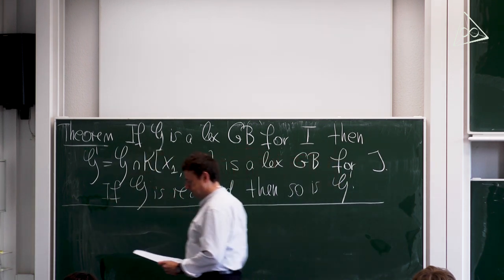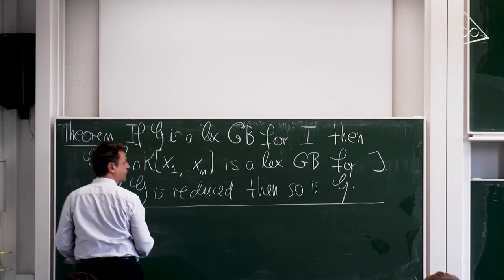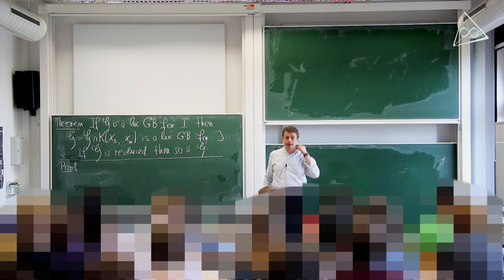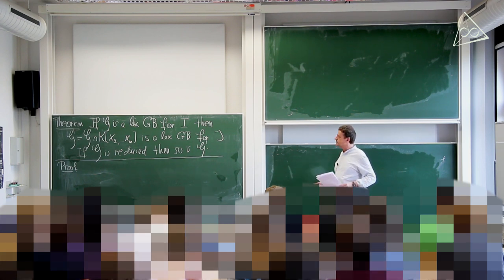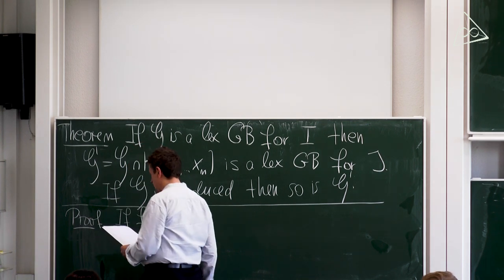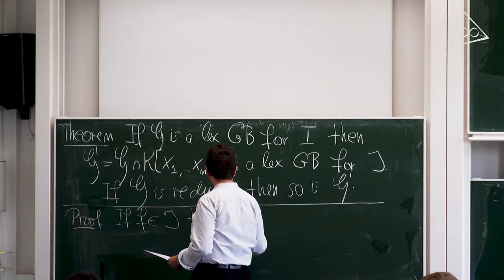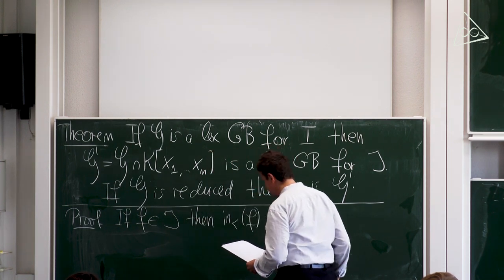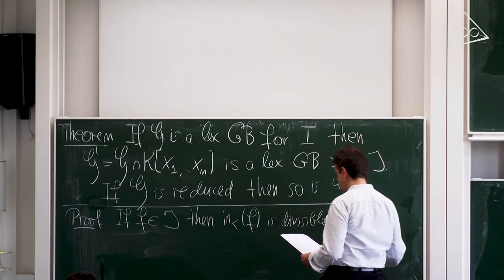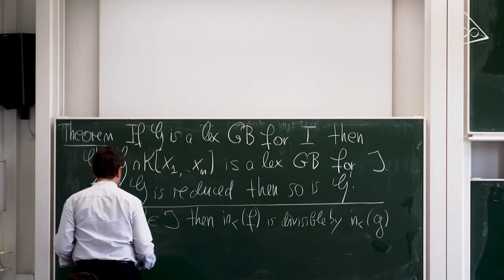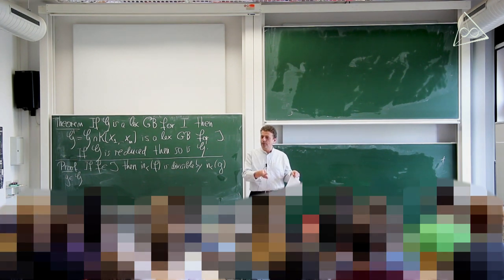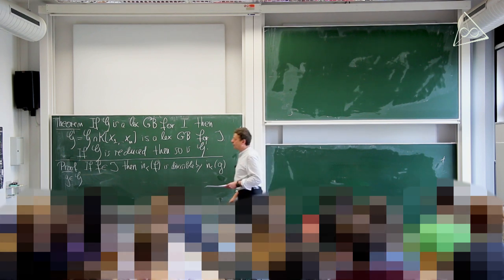Proof: suppose f is any polynomial in the elimination ideal j. By properties of the lexicographic order and the definition of Gröbner bases, the initial monomial of f is divisible by the initial of some g in the Gröbner basis. Since f is in j ⊂ I, none of the late variables xₘ₊₁ up to xₙ appear in that monomial. By lexicography, if a high variable is missing from the leading term, it's missing from the entire polynomial g, so g is in G′. Therefore G′ is a Gröbner basis for j.